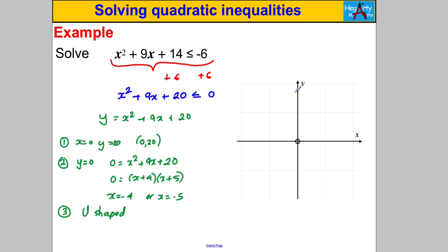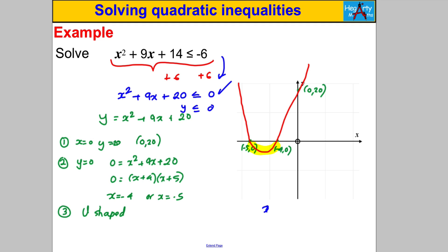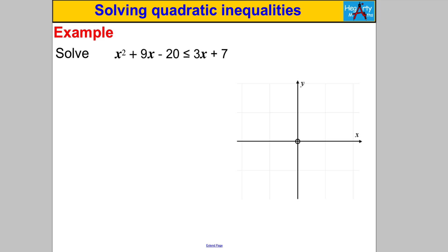We know it goes through (0, 20) up there, (-4, 0) and (-5, 0), and it's u-shaped, so it looks something like this. We're solving x² + 9x + 20 ≤ 0, which means finding where y ≤ 0 on the graph. That's between the two roots, so the x-values are between -5 and -4. Using less-than-or-equal-to signs: -5 ≤ x ≤ -4 is our answer.